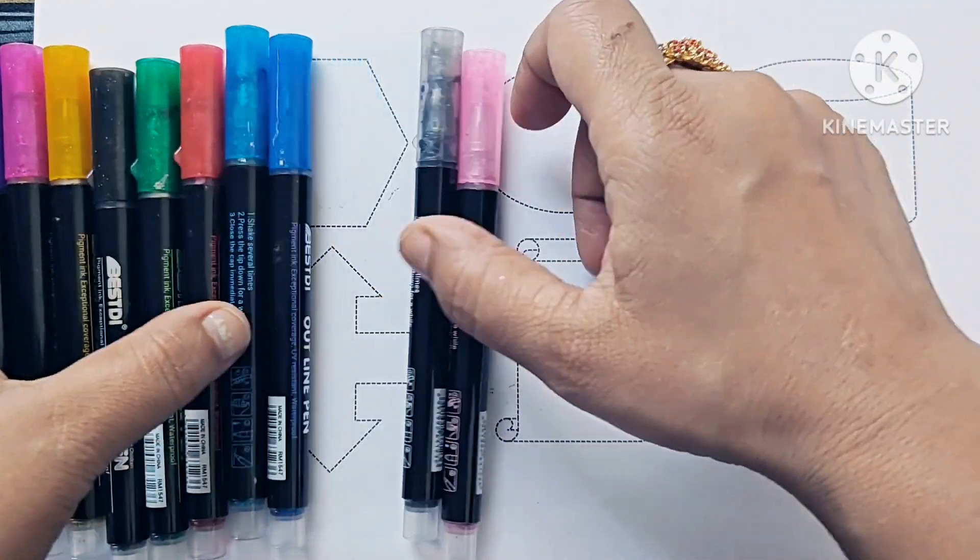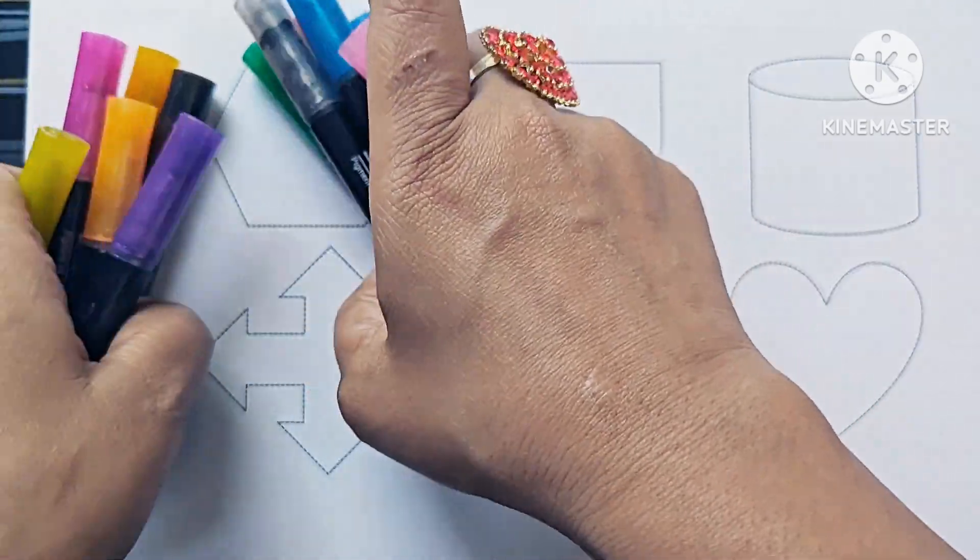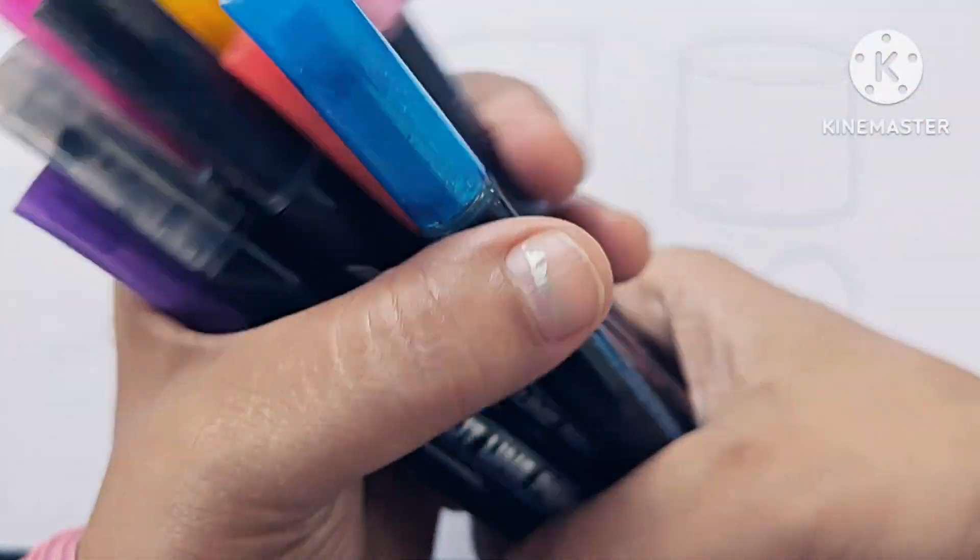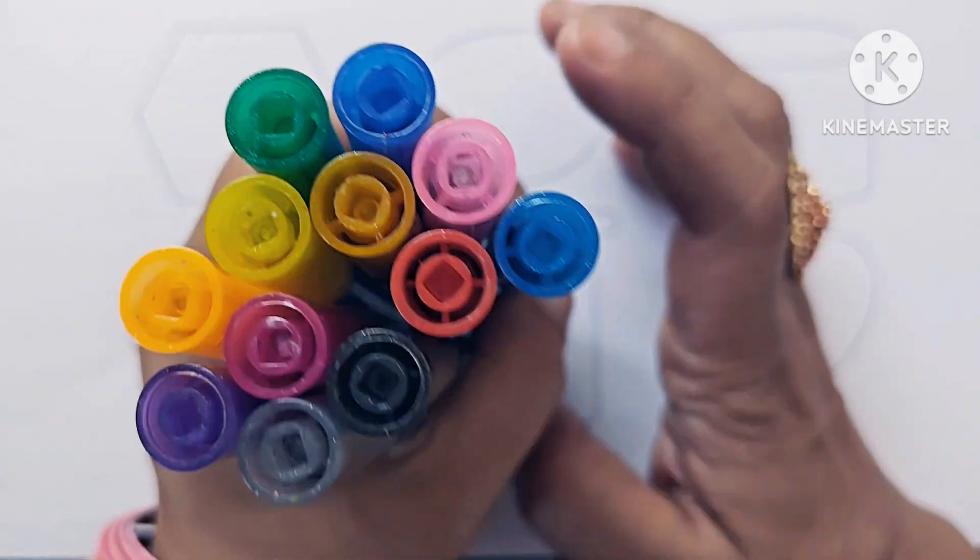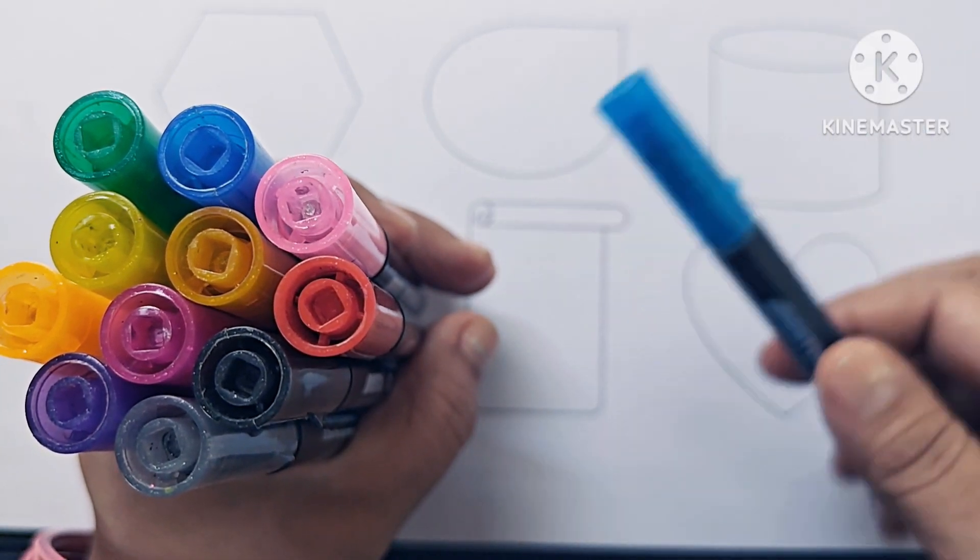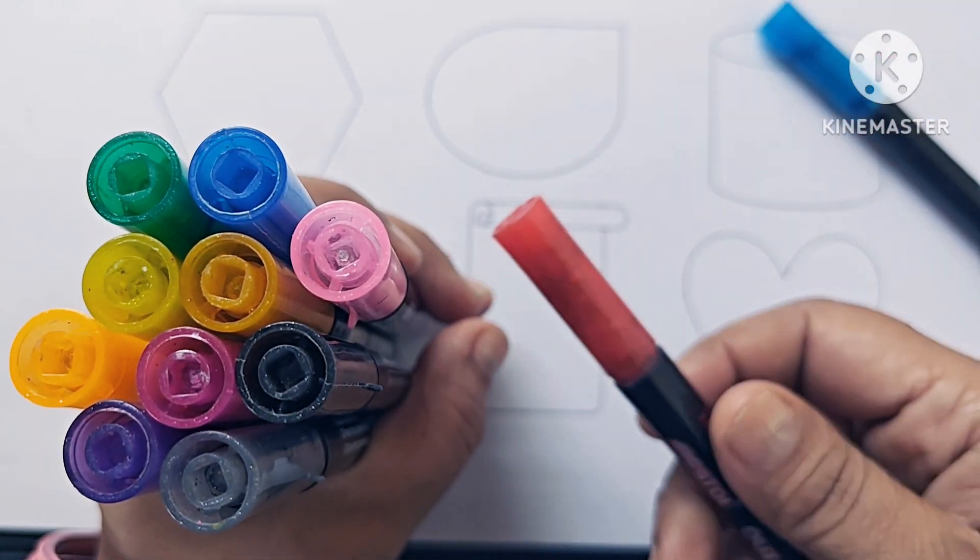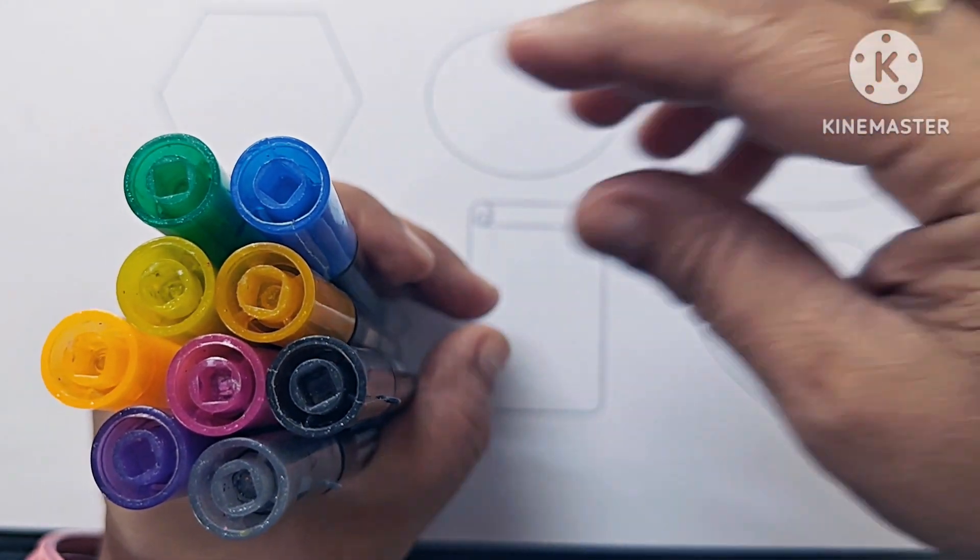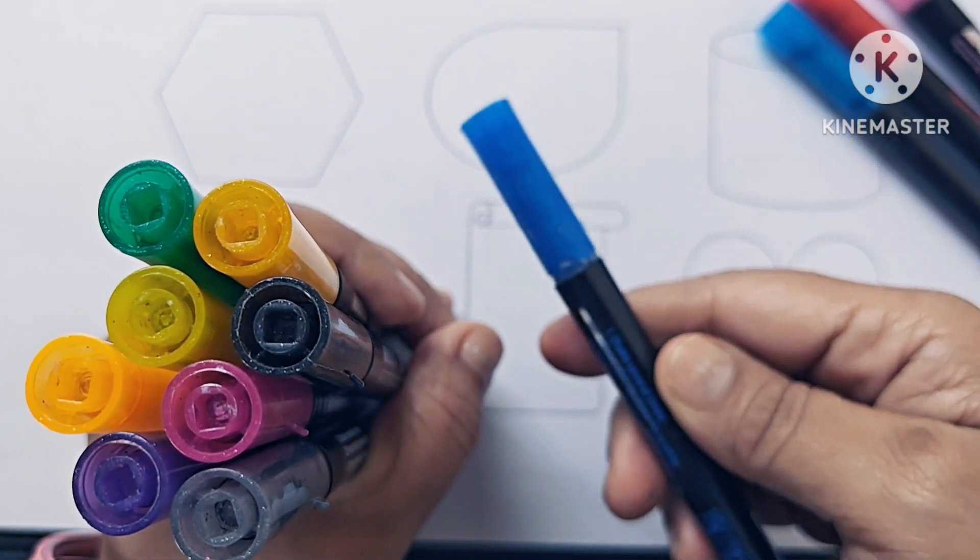Now let us know about the color names: Blue color, Sky blue color, Red color, Baby pink, Dark blue, and Black.